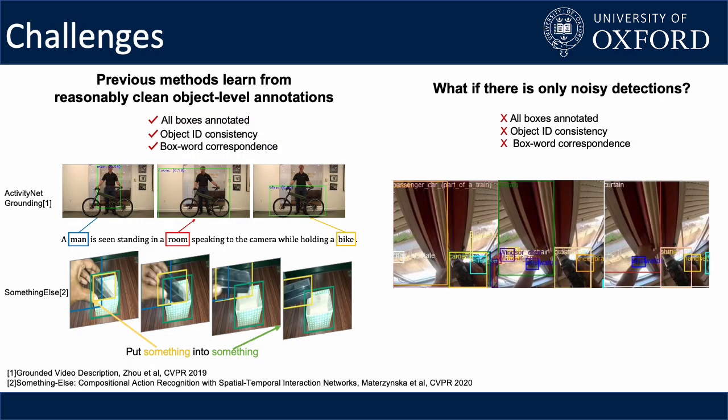Although predicting object-level information in pretraining had been explored in many prior works, they rely on either human annotations or object detections of good quality. However, good annotations are not always available. When there are only noisy detections, those models cannot learn much information from them.